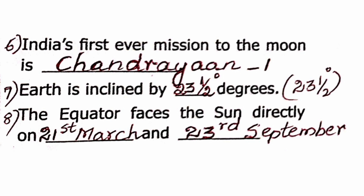Question 5: Jupiter planet has many natural satellites. Question 6: India's first ever mission to the moon is Chandrayaan 1. Question 7: Earth is inclined by 23.5 degrees.